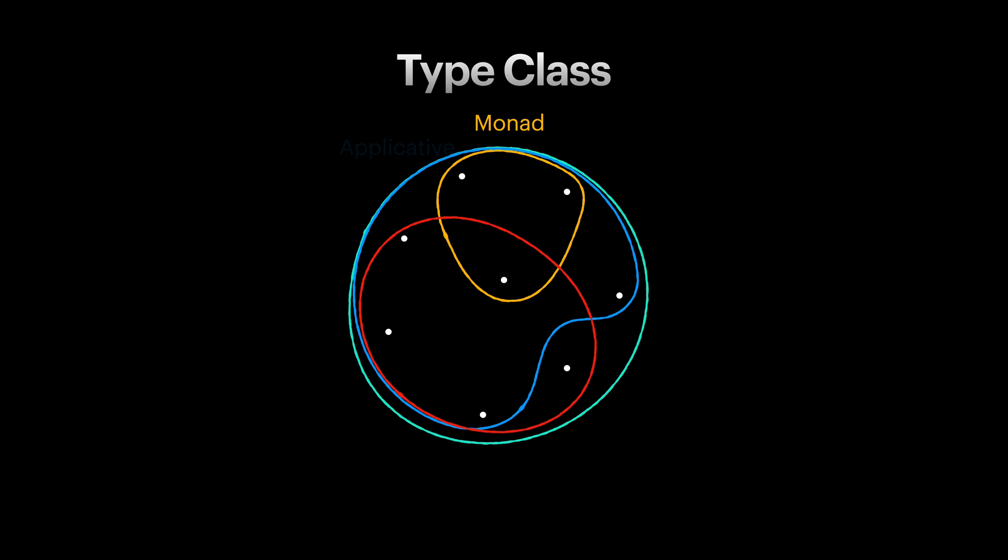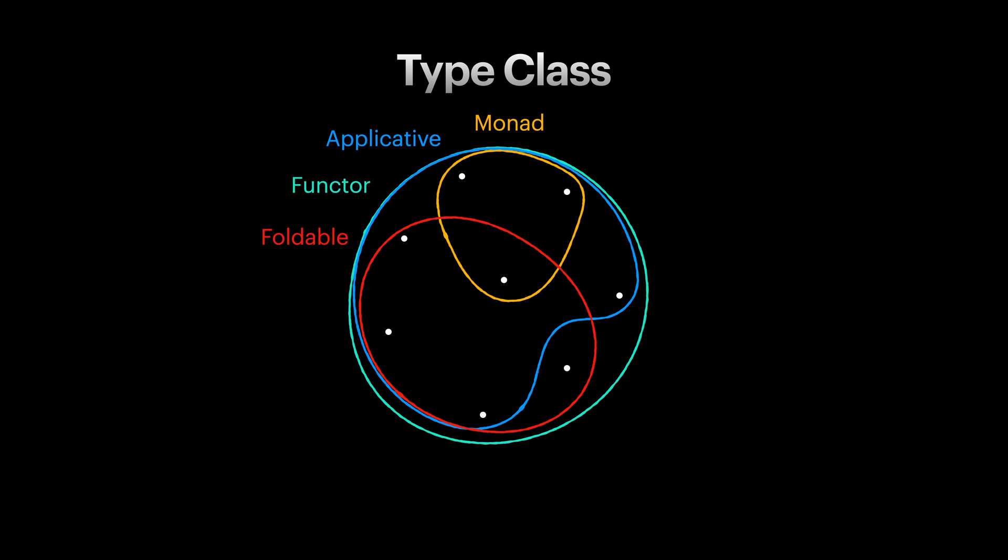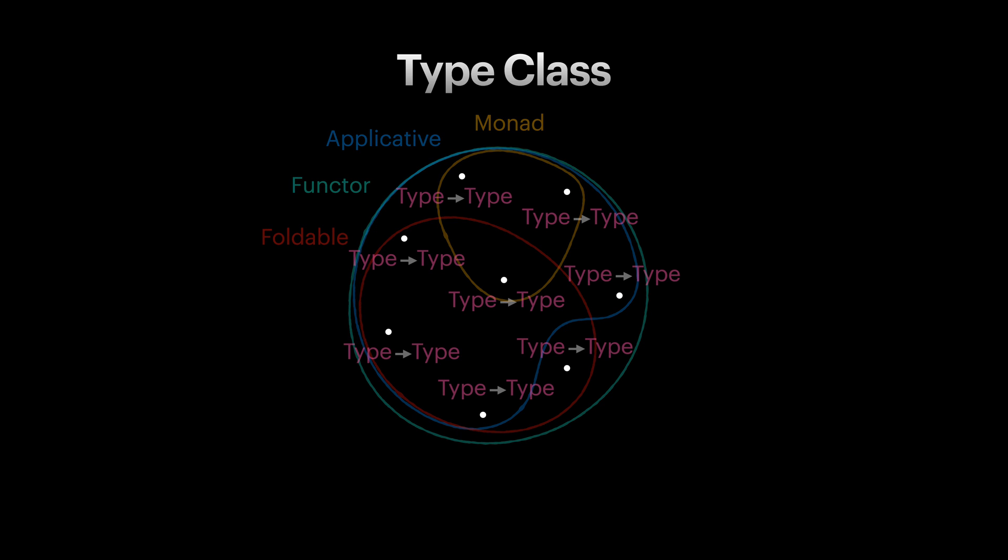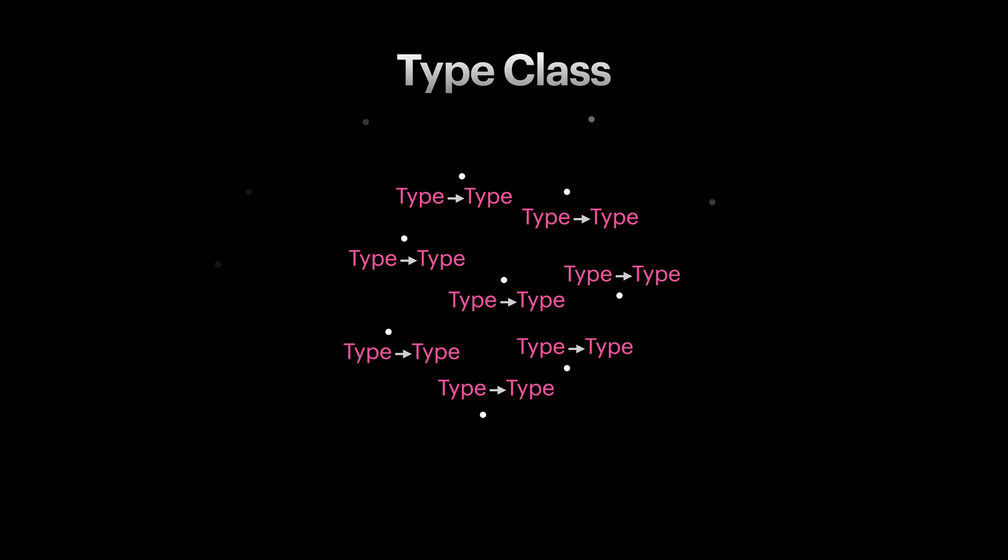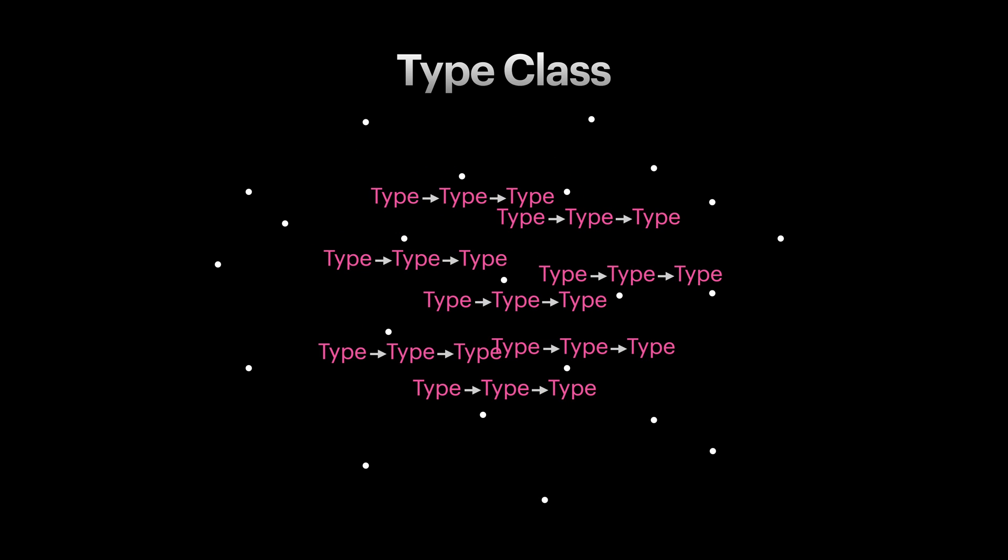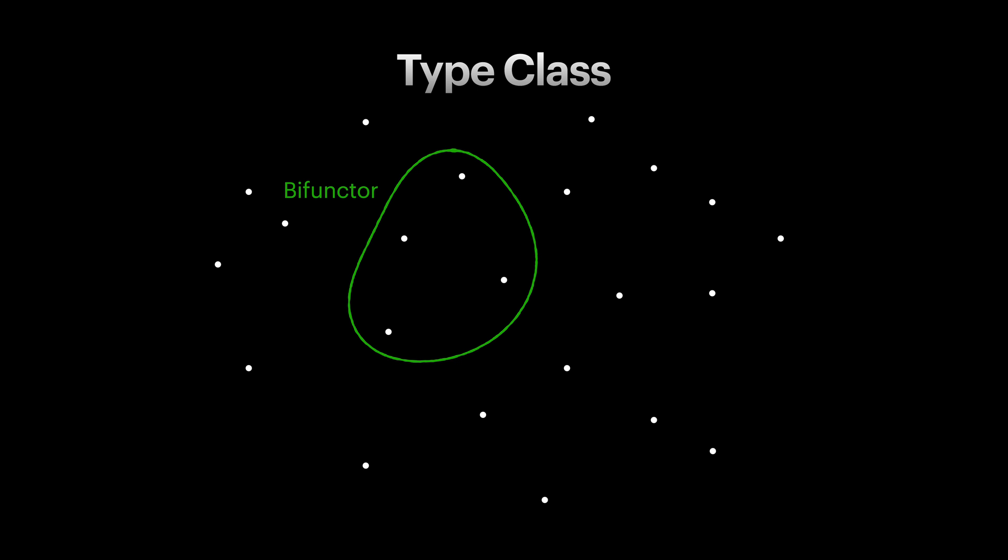Again, the tool that lets us model and implement these common behaviors is type class. Here we were only focusing on the type constructors of kind type to type. But why should we stop there? We can continue this to categorize the higher arity kinds like type to type to type. For example, bifunctor groups the structures of kind type to type to type that are mappable on two wrapped types.